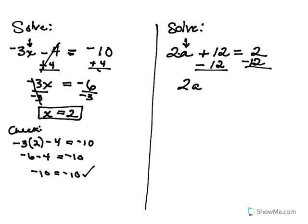So that's going to leave us with 2a equals negative 10. So now I'm looking at 2 times a equals negative 10, so in order to separate a multiplication I must divide.